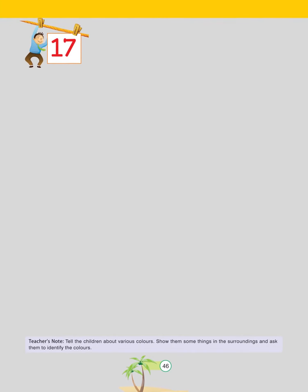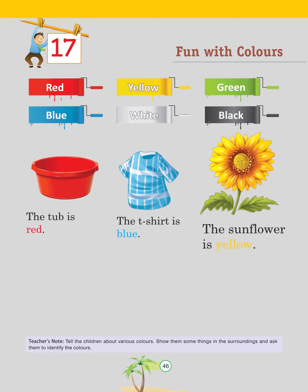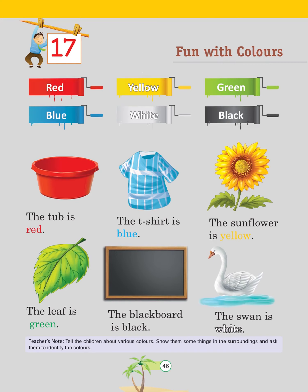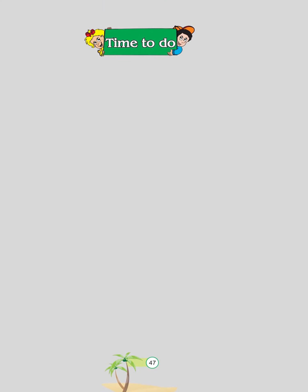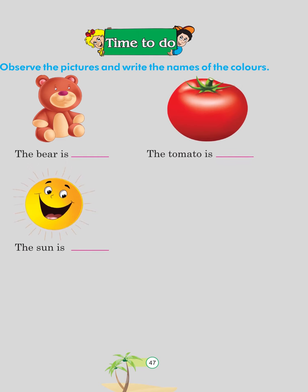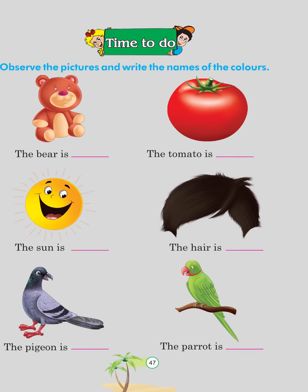Chapter 17: Fun with Colors — red, yellow, green, blue, white, black. The tub is red. The T-shirt is blue. The sunflower is yellow. The leaf is green. The blackboard is black. The swan is white. Teacher's note: Tell the children about various colors; show them things in the surroundings and ask them to identify the colors. Time to do: The bear is brown, the tomato is red, the sun is yellow, the hair is black, the pigeon is gray, the parrot is green.